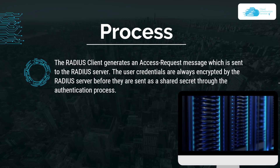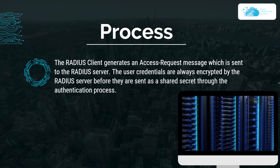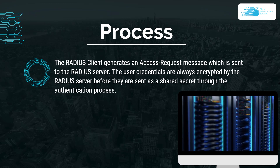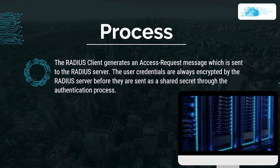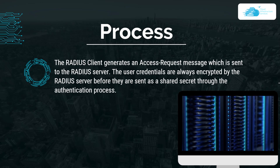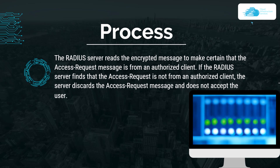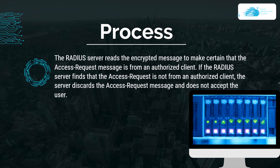The RADIUS client generates an access request message which is sent to the RADIUS server. The user credentials are always encrypted by the RADIUS server before they are sent as a shared secret through the authentication process. After that, the RADIUS server reads the encrypted message to make certain that the access request message is from an authorized client.